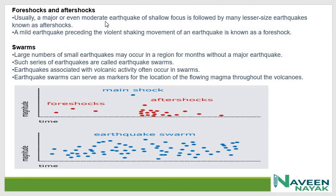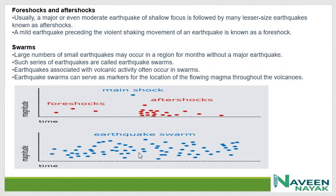A major or even moderate earthquake of shallow focus is followed by many lesser-sized earthquakes known as aftershocks. After a huge earthquake, aftershocks will occur frequently. A mild earthquake preceding the violent shaking movement of an earthquake is known as a foreshock. Swarms: a large number of small earthquakes may occur in a region for months without a major earthquake — a series of such earthquakes is called earthquake swarms. Earthquakes associated with volcanic activity often occur in swarms and can serve as markers for the location of flowing magma throughout volcanoes.